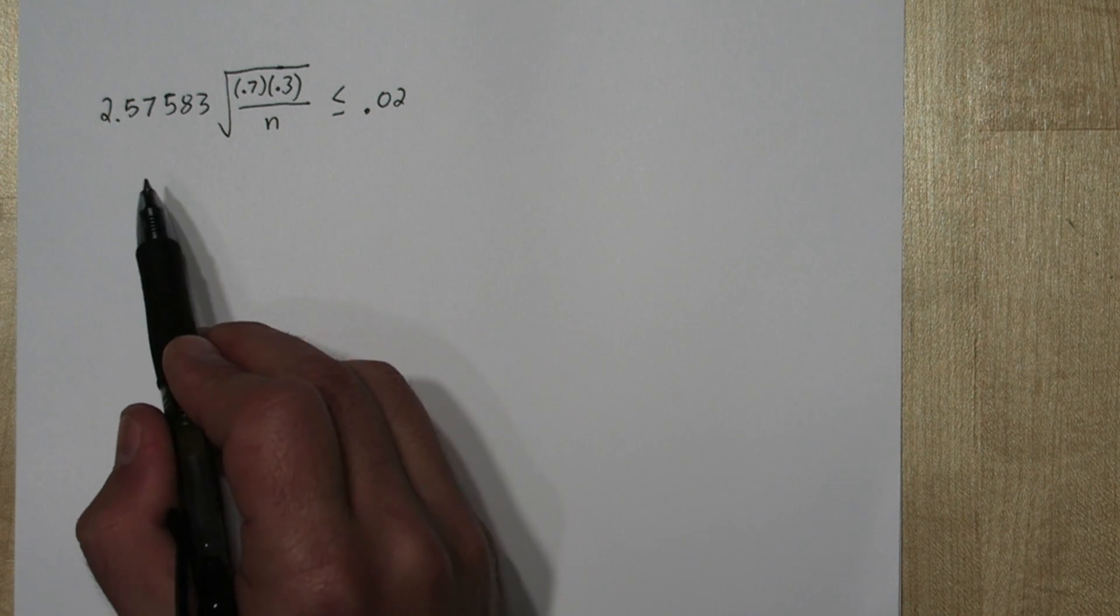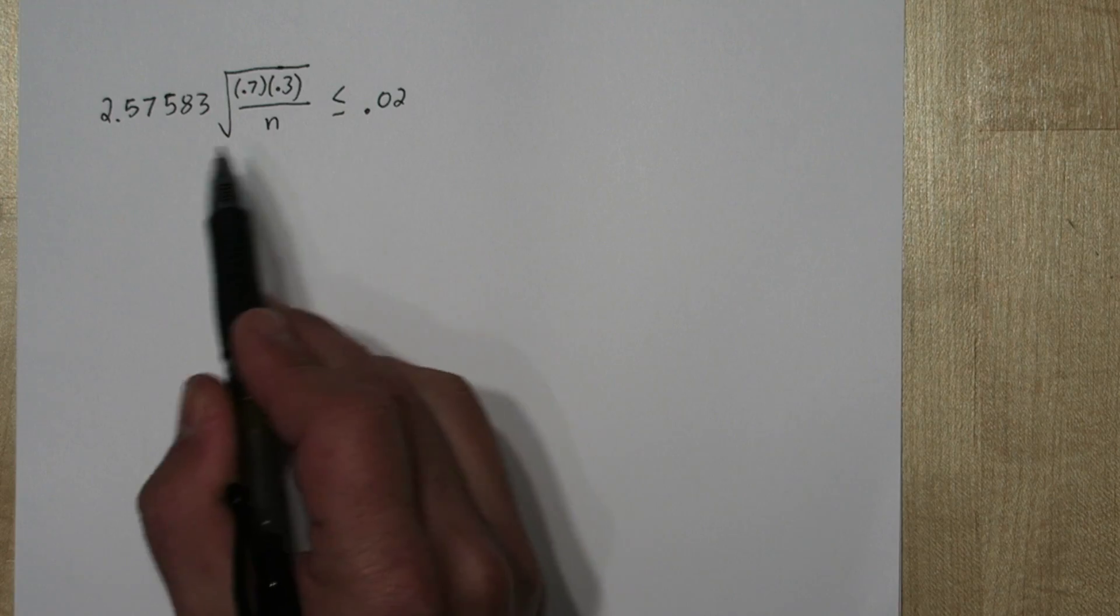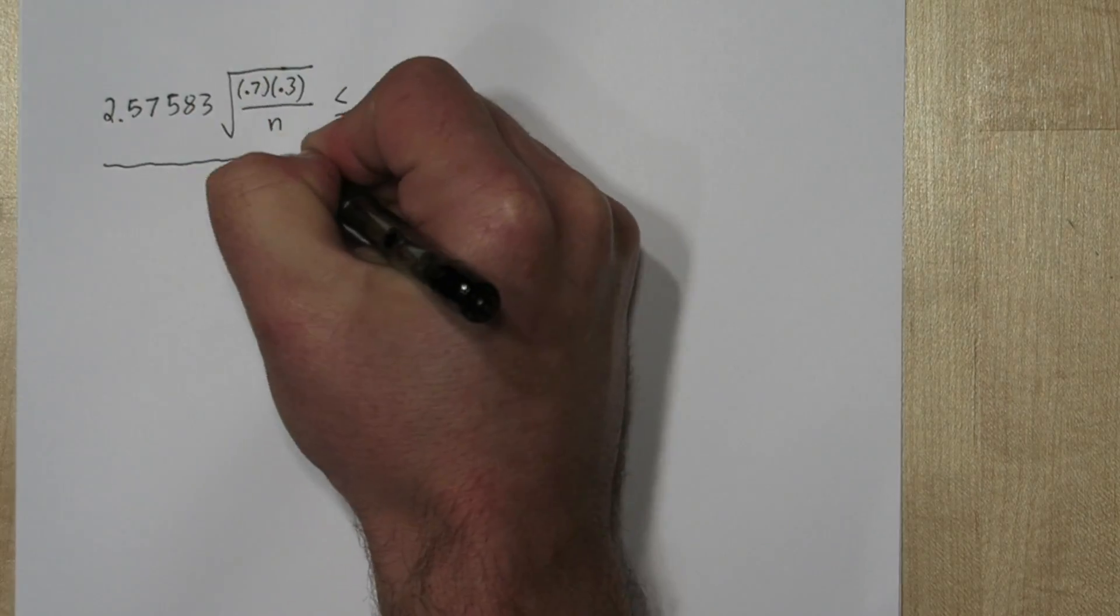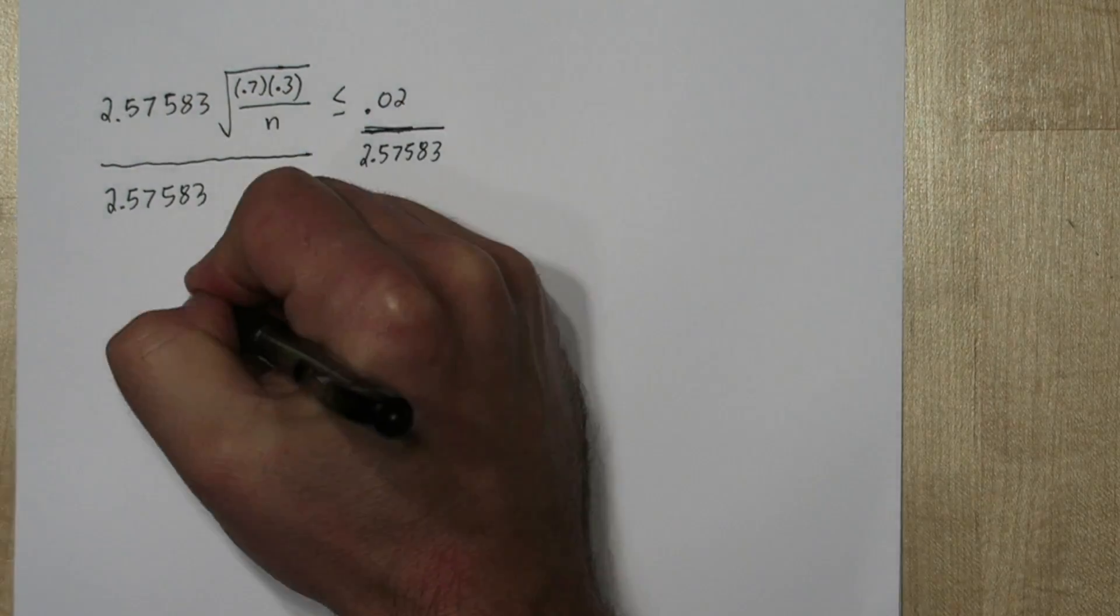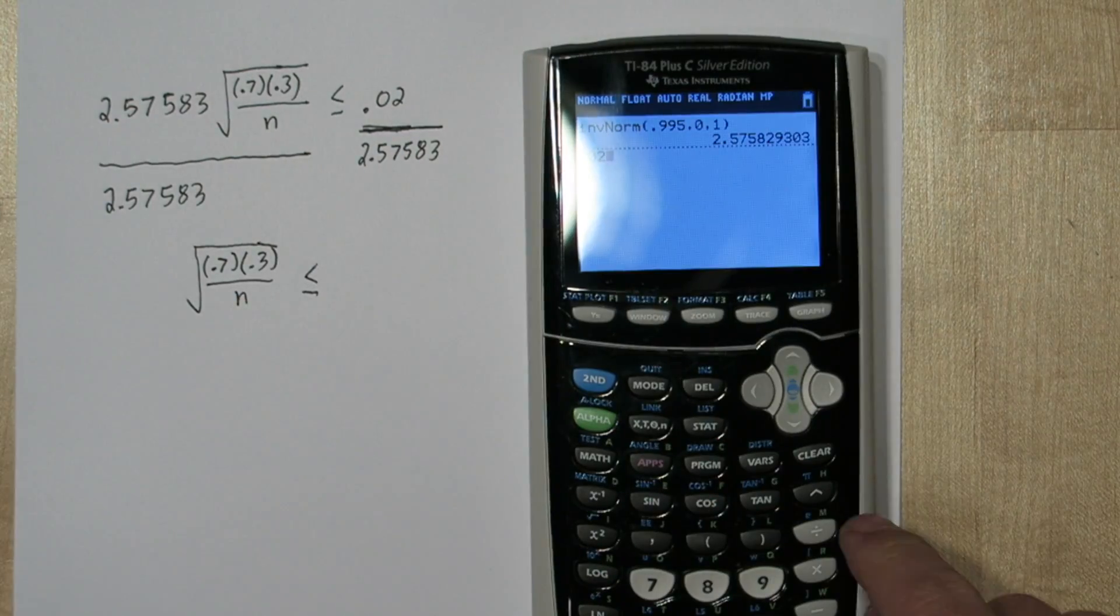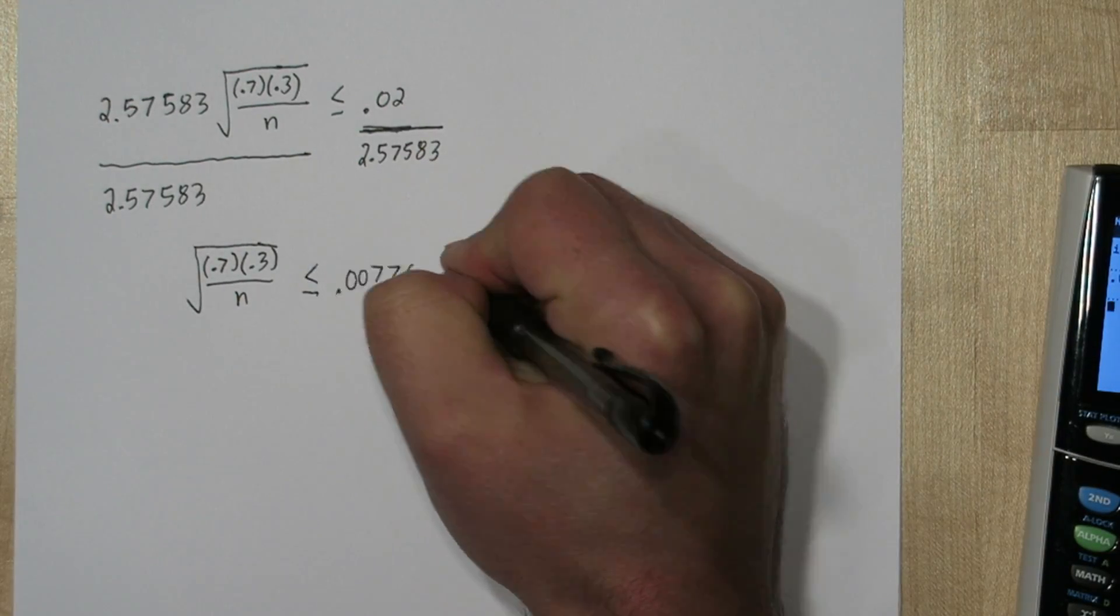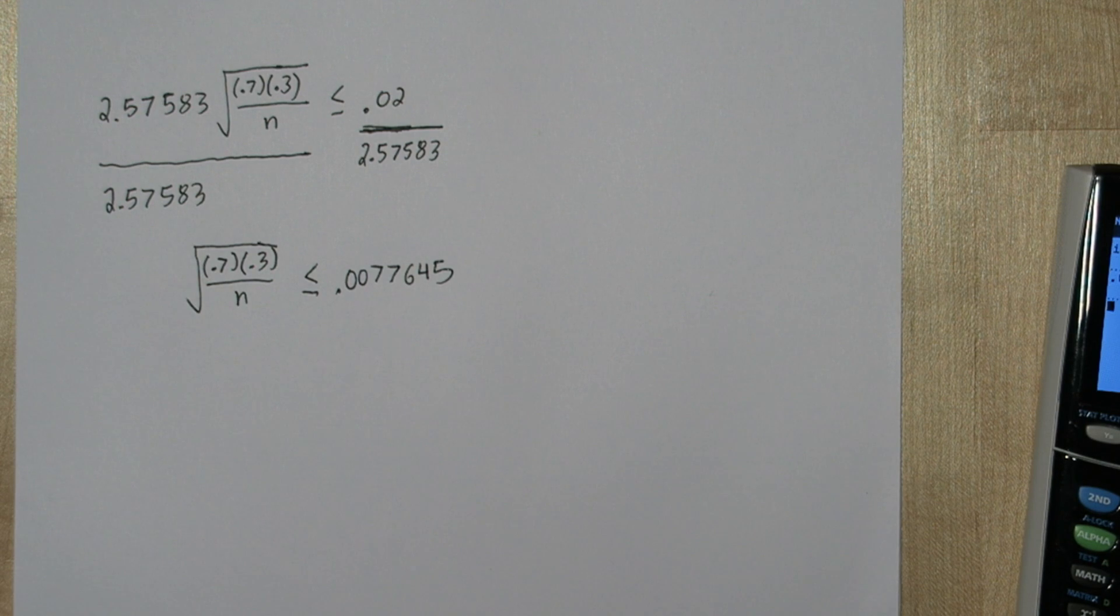So let's look at the algebra to solve for n. Our first step is going to be to divide both sides by our critical value here. Our next step is to get rid of the square root, and we can do that by squaring both sides.